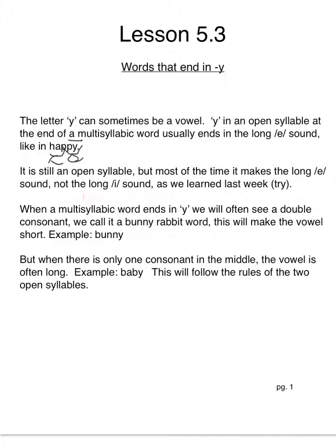When a multisyllabic word ends in Y, we will often also see a double consonant — we call it a bunny rabbit word, and this will make the vowel short. The example we saw was 'bunny.' You split up the two N's: bun-nee. We split up the two N's, just like 'rabbit' — rab-bit. We learned that syllabication division rule before.